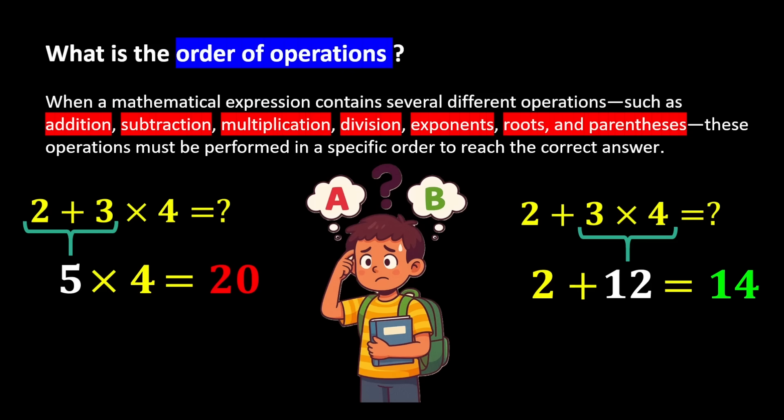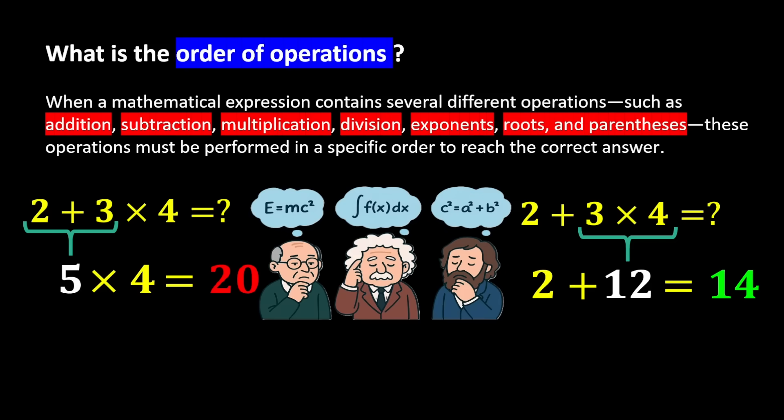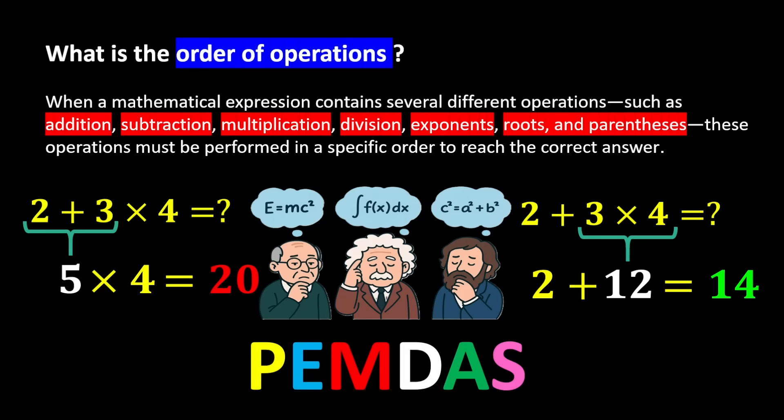This is where the order of operations becomes important. Imagine everyone choosing their own method — mathematics would become disorganized. Therefore, mathematicians agreed on a universal rule to prevent confusion, called the correct order of operations, which is known by the short abbreviation PEMDAS. Each letter in the word PEMDAS represents a specific step.